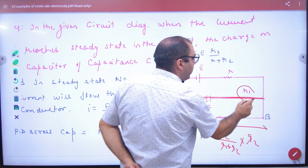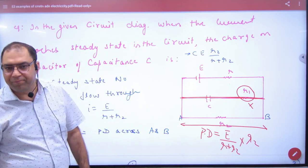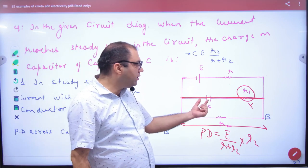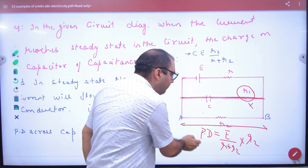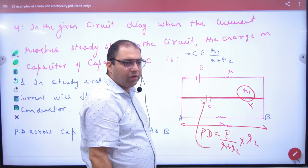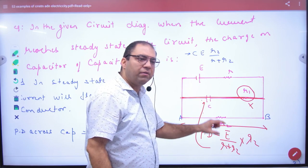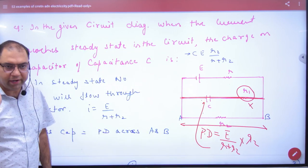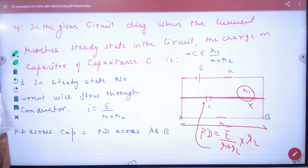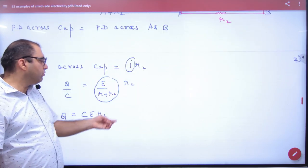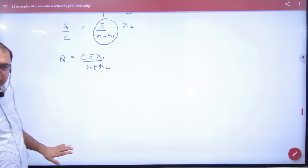The potential difference is going to be divided by R2 into the current. The potential difference is going to be made. The capacitor. So the potential difference is going to be made. Then the potential difference is going to be solved with that charge clear.